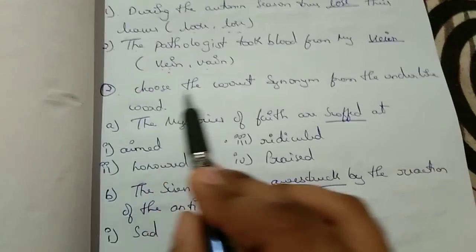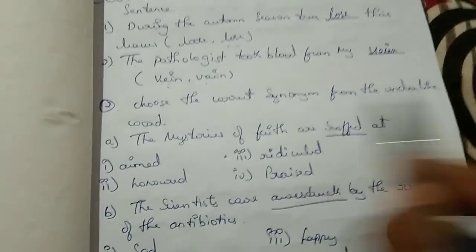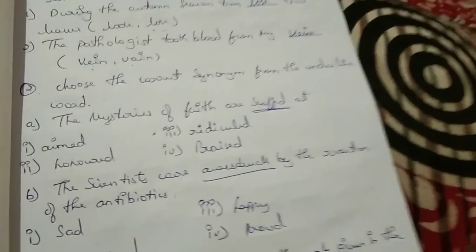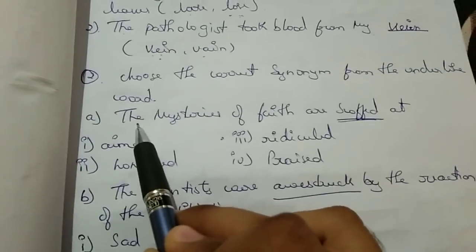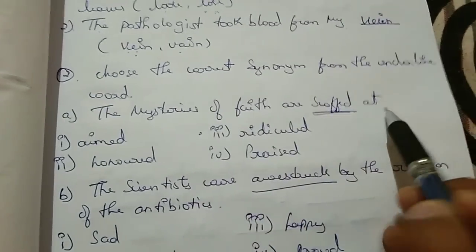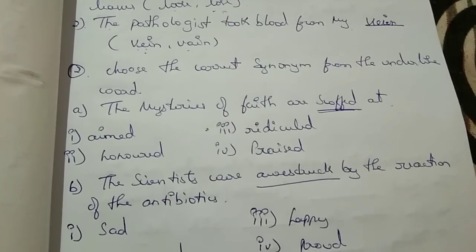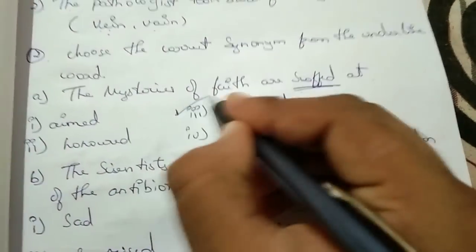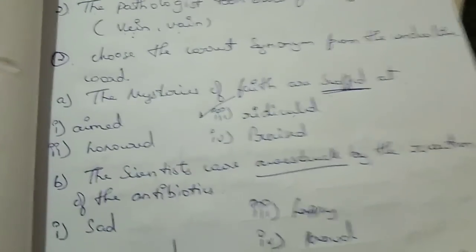Choosing from the bracket is easy, but you should have knowledge of the difference between two words — what this word means and what that word means. Then you can answer. Next: choose the correct synonym for the underlined word. They will give a hard word that is underlined, so we need to know that word's meaning. For example: 'The mysteries of faith are art' — 'scoffed' means ridiculed, so that is the correct answer.